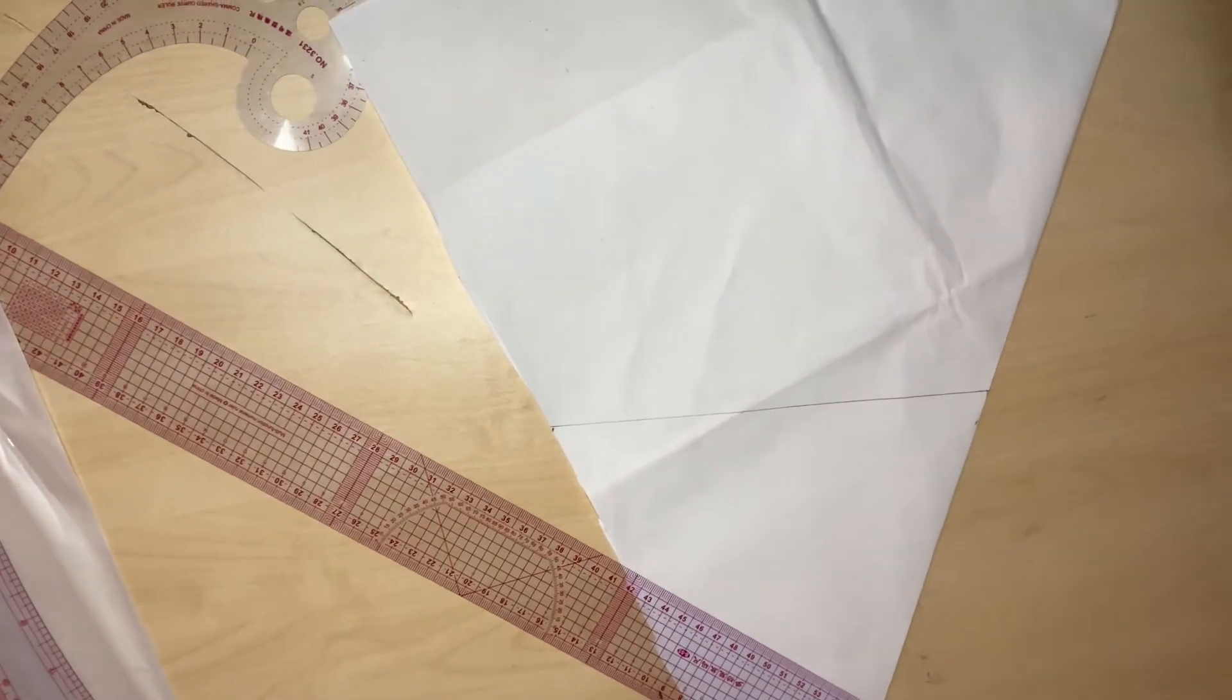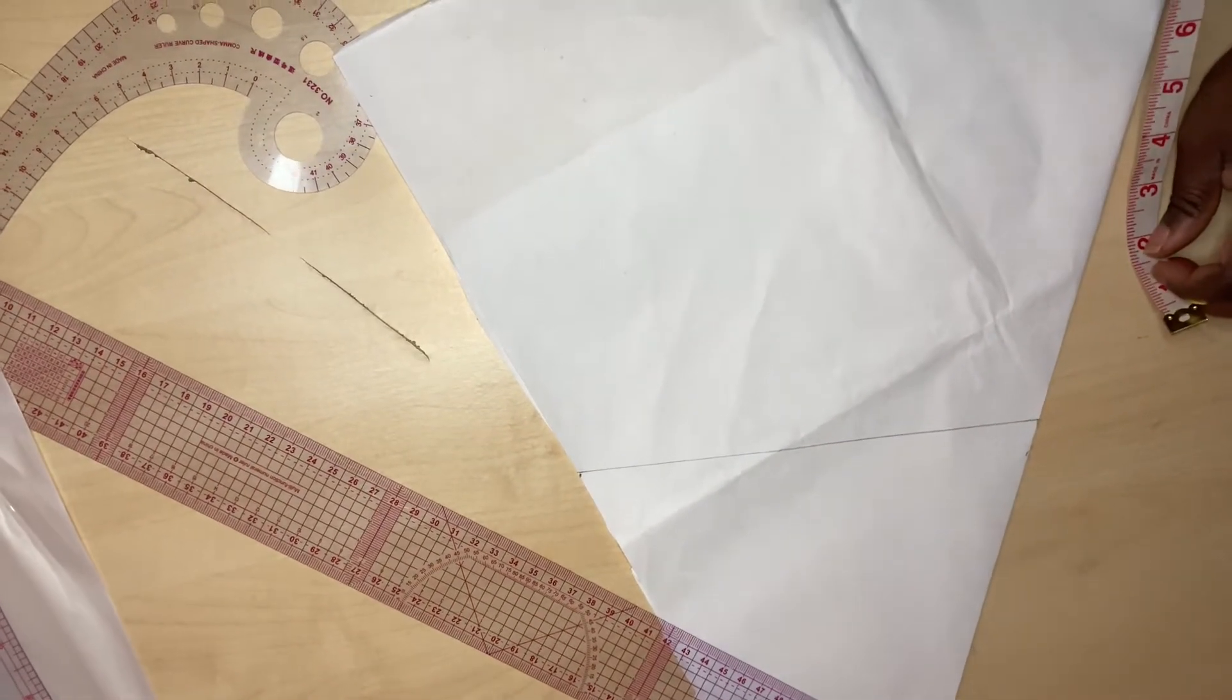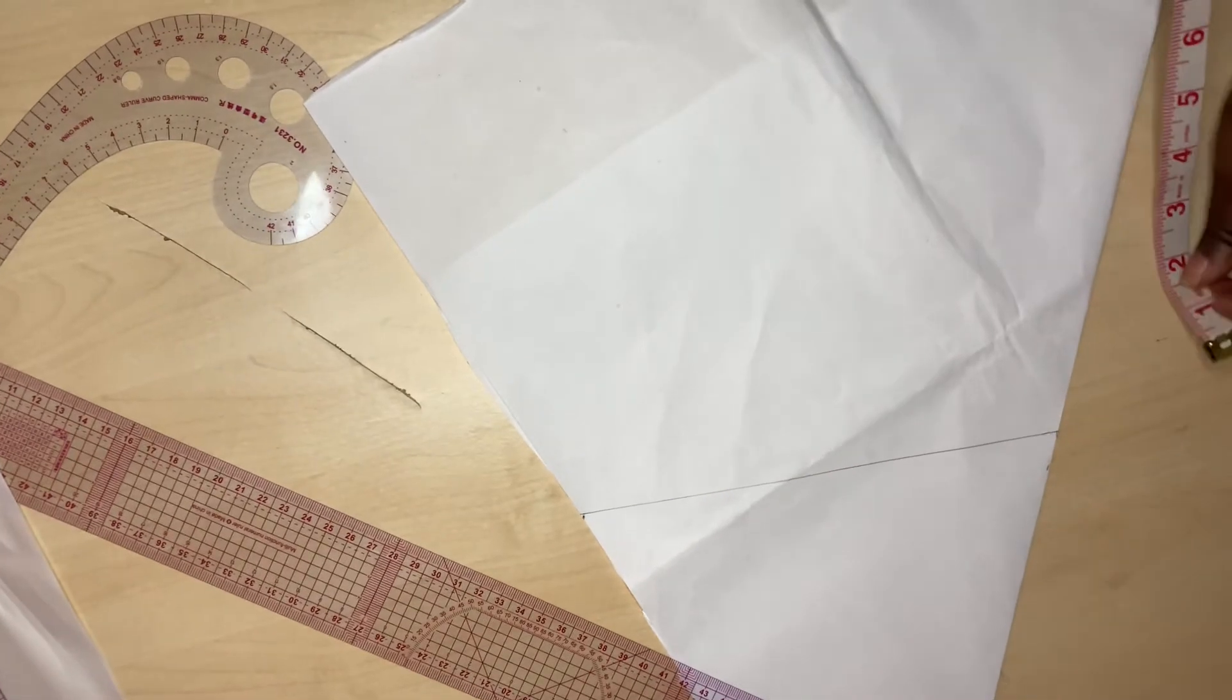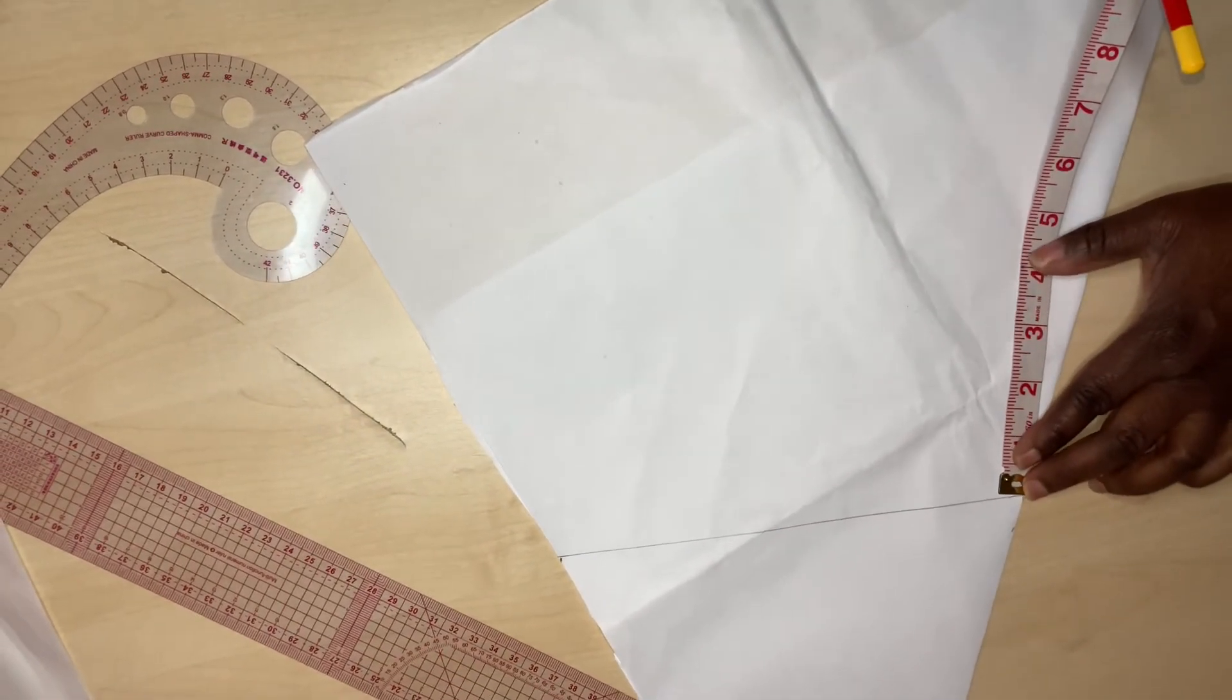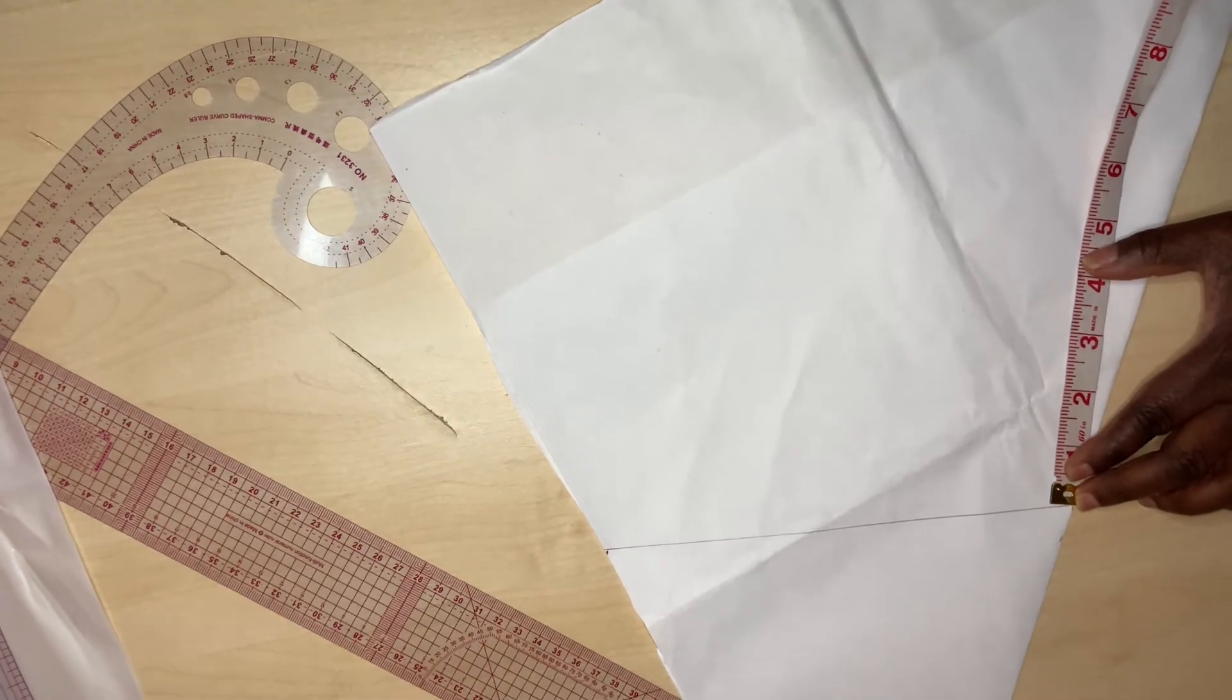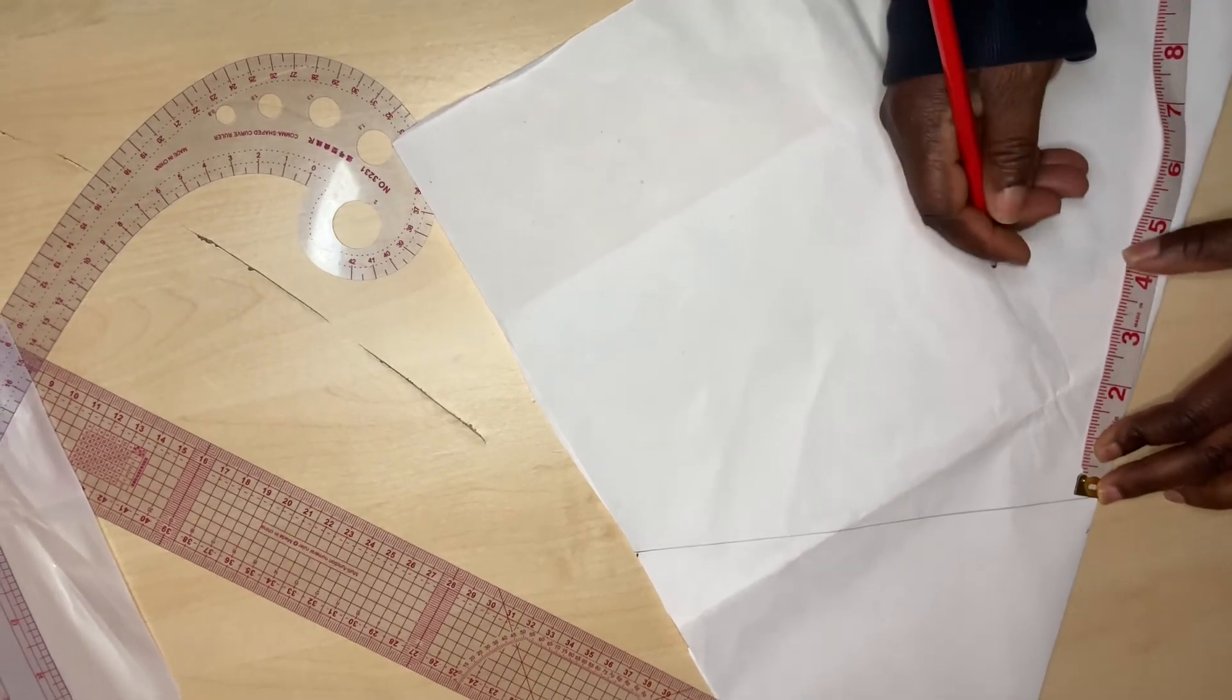The cup we are going to use is 3.6. For you to get your cup height, you have to divide your bust by 12 then add 0.5 inches to it. Mine is 3.1 when I divided it by 12. It gives me 3.1, then I add 0.5 inches to it, so that will be 3.6.